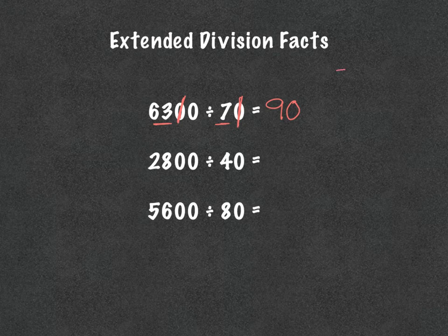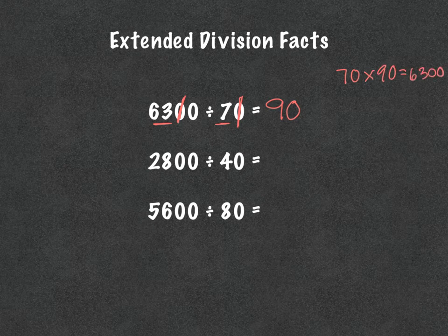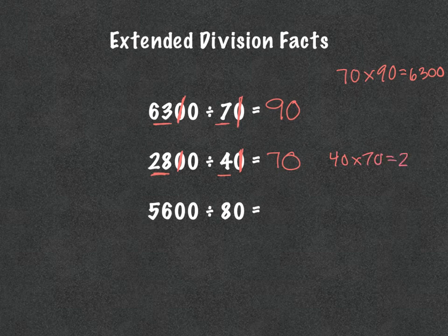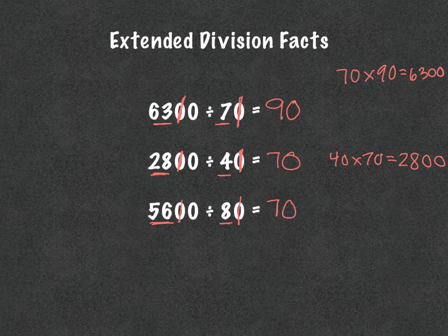And if we were to check, 70 times 90 would indeed be 6,300, so fact families are a quick check. Next: 28 divided by 4 is 7, and then I can cancel out these zeros and I get 70. And again, 40 times 70 is 2,800. Last one on this page: 56 divided by 8 is 7. I'm going to cross out these zeros, and I get 70.